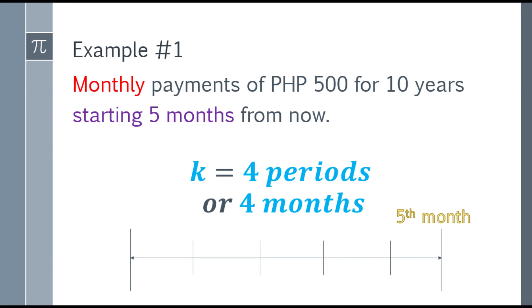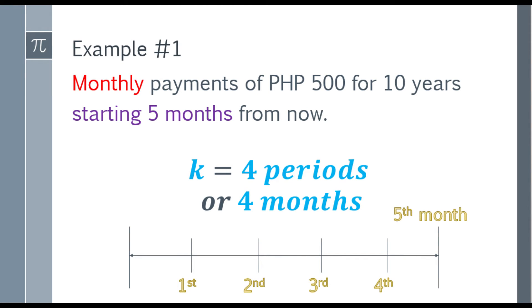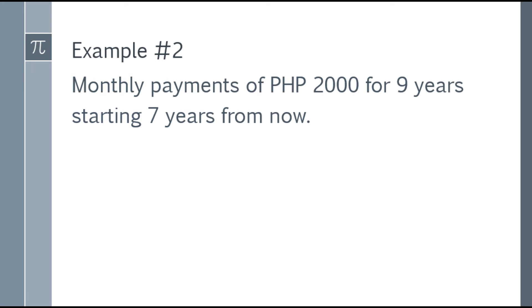In the illustration, the end represents the 5th month because starting 5 months from now. The 1st, 2nd, 3rd, and 4th month are the times when there's no payment. We're talking about monthly, so 1st month, 2nd month, 3rd month, and 4th month. The question is what is the period of deferral? Again, the period of deferral in deferred annuity is the times when there's no payment, which is 4 periods or 4 months.